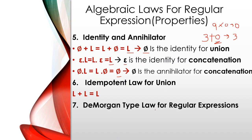Next is the De Morgan type law for regular expressions. In this case, (L plus B) star is equal to L star into B star. Also, L star into B star whole star follows from the rule where we change union to concatenation. And (L plus B) whole star equals (L whole star) and related closure forms.